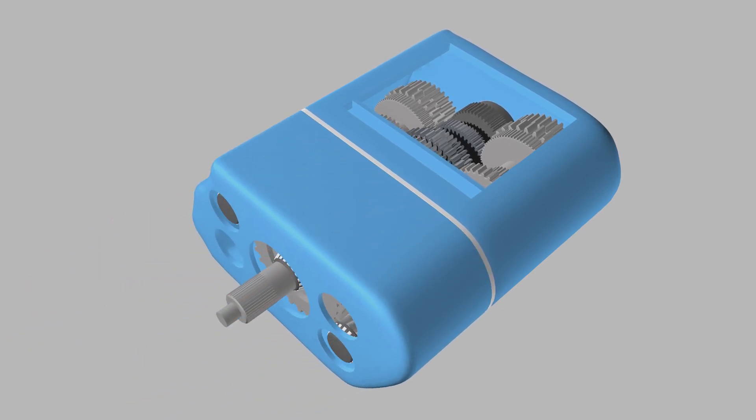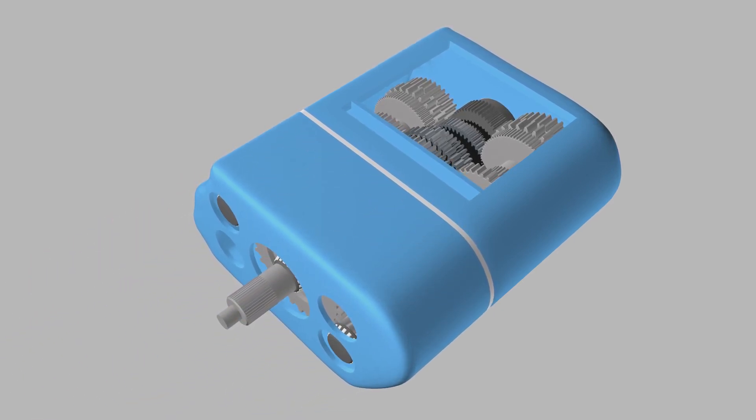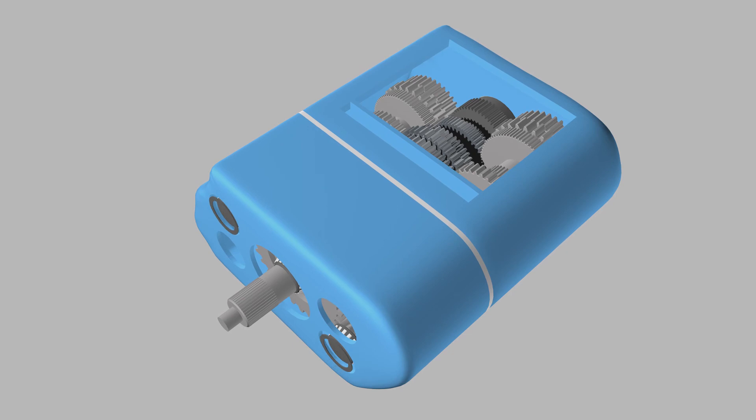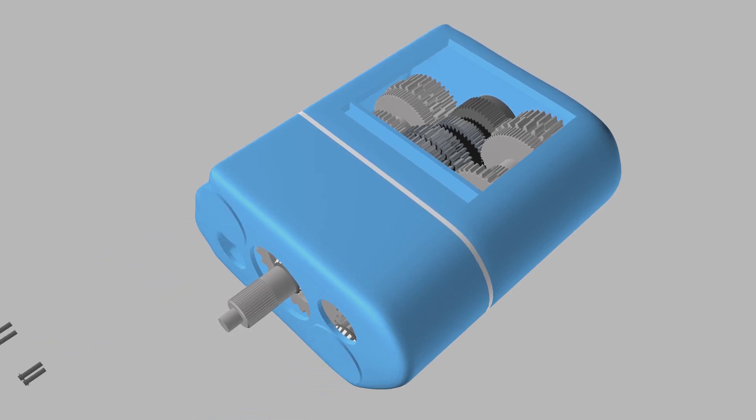Finally, install the auxiliary assembly onto the main transmission housing. Shim the two auxiliary countershafts for proper end play float and tighten cap bolts to complete the assembly.